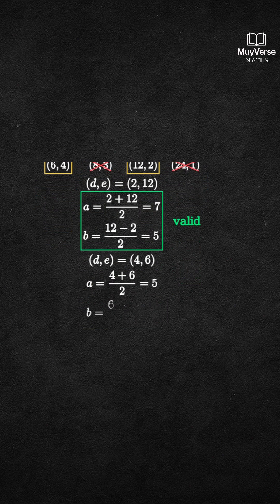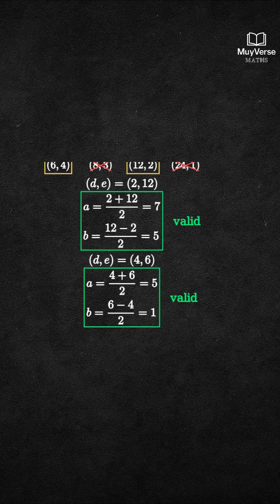Finally, d equals 12 and e equals 2. Then a equals 7, but b equals (2 minus 12) over 2 equals negative 5, which is not positive. Reject.